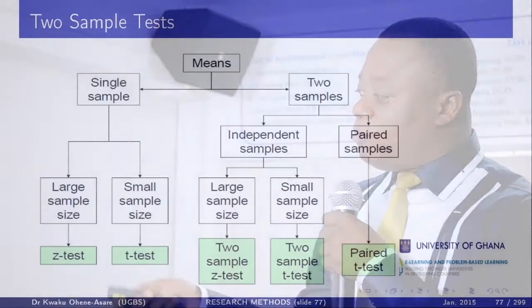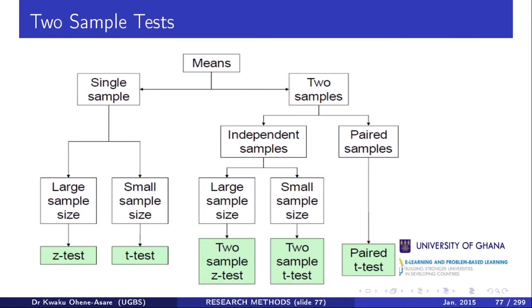Paired samples deal with the same subject before and after. For example, the performance of level 300 students before and after an intervention — the same students repeating themselves, also called repeated samples. When you compare level 300 students at the main campus versus city campus, that is independent samples. We are going to assume small sample size, so we use the t-test and not the z-test.